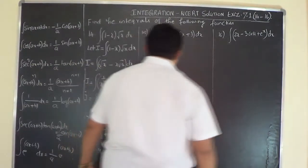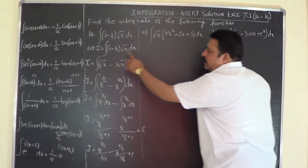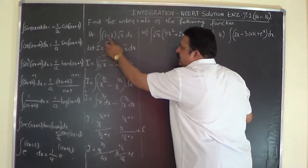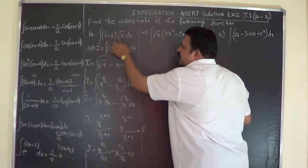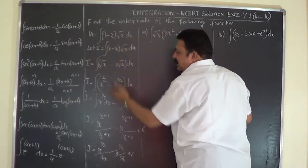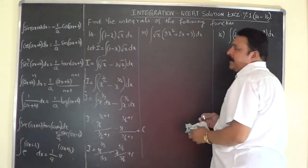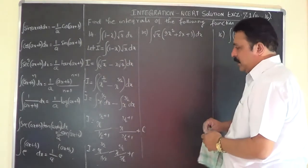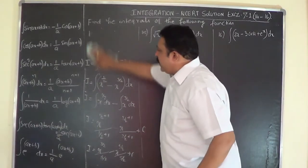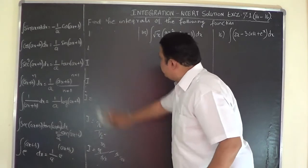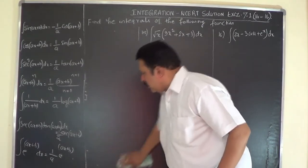So you observe that if you have two expressions with some square roots or whatever, it is better to multiply them, separate, and then integrate. I am just clearing off Problem 14 so that I have some more space to work out the remaining two problems.